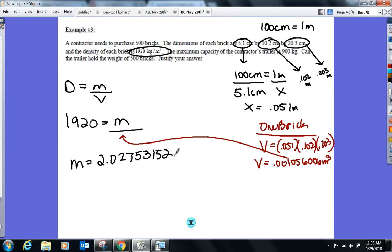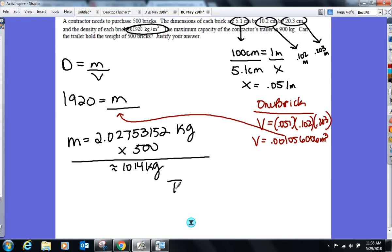Plug that into your density. Let's find the mass of one of these bricks. Weight of one brick: 2.02. I'm not ready to do any rounding yet, keeping all these numbers here. What's this in right now? What was the density out of? Kilograms. Perfect. So there's one brick, about two and change kilograms. Can I fit 500 on the trailer? What do you want to do with your one brick and 500 of them? Multiply by 500. We clearly see it's about 1014 kilograms. So this trailer—no go. Trailer will not hold 500 bricks.